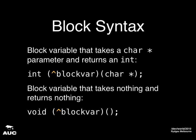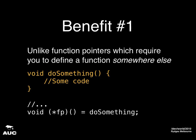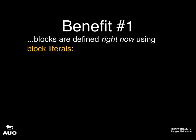Here are some examples. There's a block variable declared to take a C string and return an int. The other one at the bottom simply takes no parameters and returns nothing — representing, say, some action you just want to do without getting any information back. Benefit number one of blocks: unlike function pointers, which generally require you to define a function somewhere else, blocks are defined right inline. You use a block literal to define them.